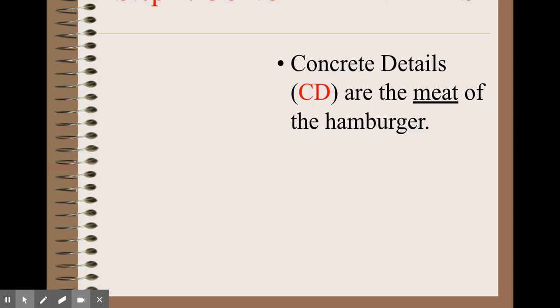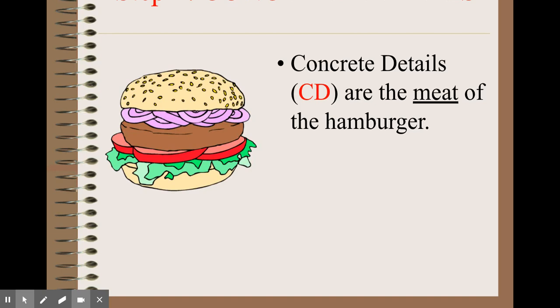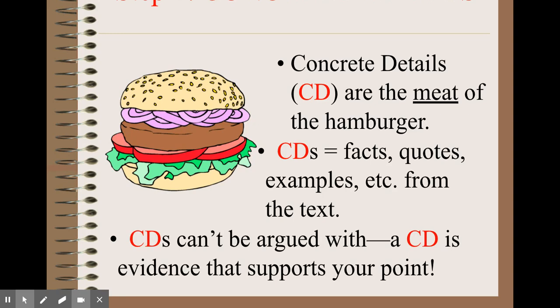The next step is concrete details, colored in red and abbreviated CD. Concrete details are the meat of the hamburger — you really can't have a hamburger without the meat. CDs can be facts, quotes, examples from the text, or examples from real life. They can't be argued with — they're evidence that supports your point. The concrete detail should be factual and support what you're trying to say in your topic sentence.